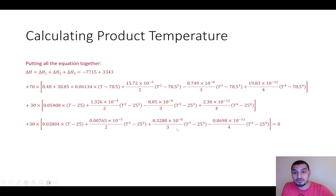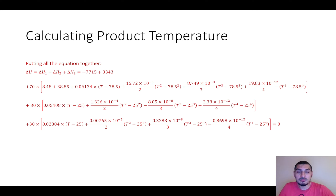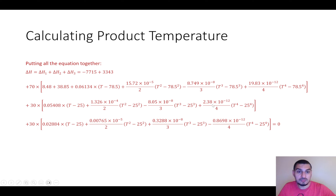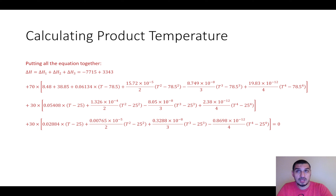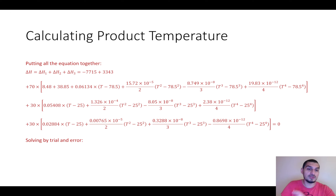We need to find the value of T that makes the entire equation equal to zero — that is, the sum of delta H1, delta H2, and delta H3 equals zero. This is not easy to solve manually and would take a lot of time. It cannot be solved directly, so we must use trial and error: assume a value of T, check whether the equation is satisfied, and iterate until we find the correct temperature.